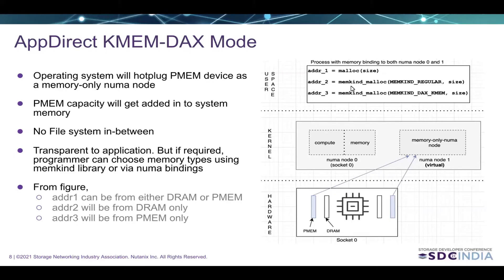For example, address one comes from a normal libc malloc, so the memory can come from either DRAM or PMEM. In address two, we use the MemKind library API called memkind_malloc and pass the memory type memkind_regular, which stands for DRAM — so address two will be allocated from DRAM only. In address three, we use memkind_malloc with memkind_dax_kmem, meaning that memory will come from the PMEM device. This is one way to use the MemKind library to choose where memory comes from. Additionally, at the process level, we can use NUMA binding to control where memory allocation comes from.